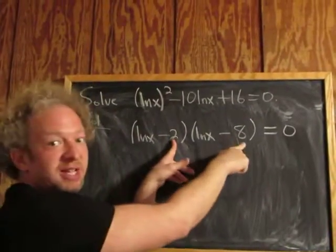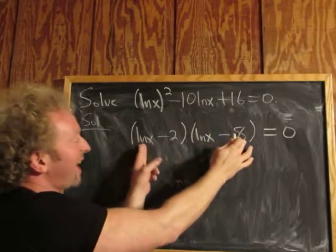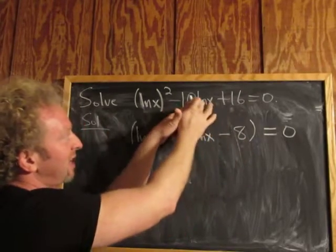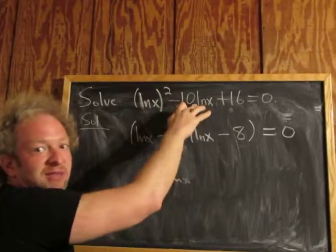Checking: -2 times -8 is positive 16, and -2 ln x plus -8 ln x gives you -10 ln x. The inside and outside terms add up to give you the middle coefficient.